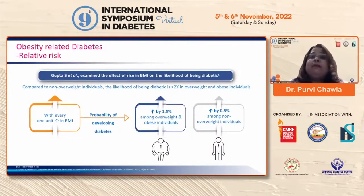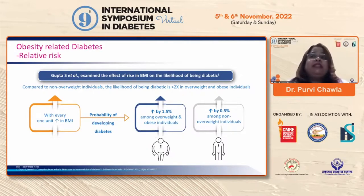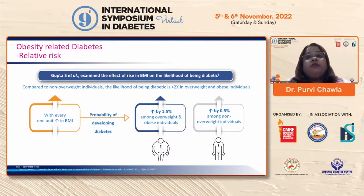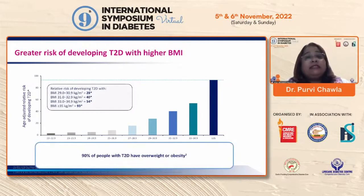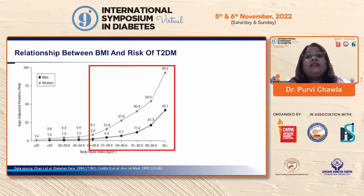The effect of rise in BMI on the likelihood of being diabetic has been well studied. Compared to non-overweight individuals, the likelihood of being diabetic is more than twice in overweight and obese individuals. With every unit increase in BMI, the probability of developing diabetes is more than 1.5 percent among overweight and obese individuals, and 0.5 percent in non-overweight individuals. More than 90 percent of people with diabetes have overweight or obesity.